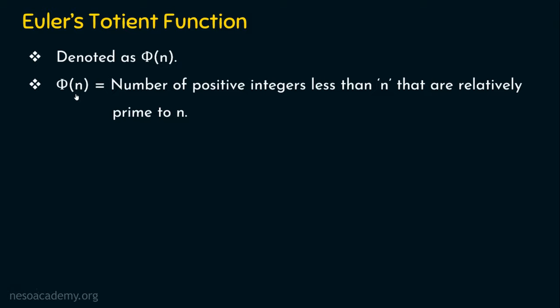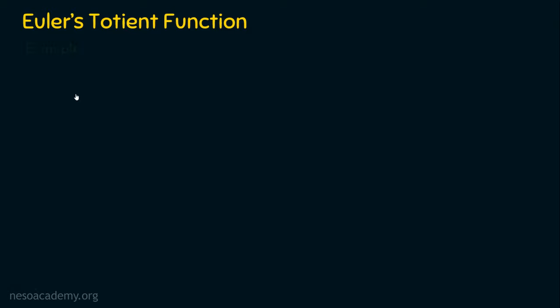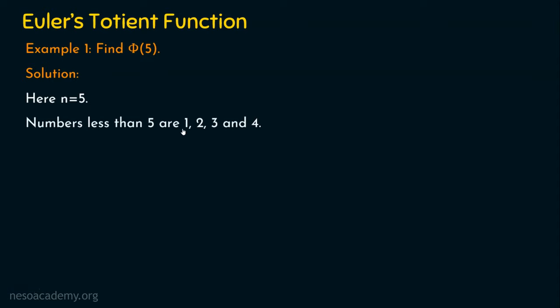Let's dive into the first example. Here we are going to find phi of 5, so n is equal to 5. As per the definition, how many numbers that are less than n are relatively prime to n gives us phi of n. The numbers that are lesser than n are 1, 2, 3, and 4, because here n is 5.